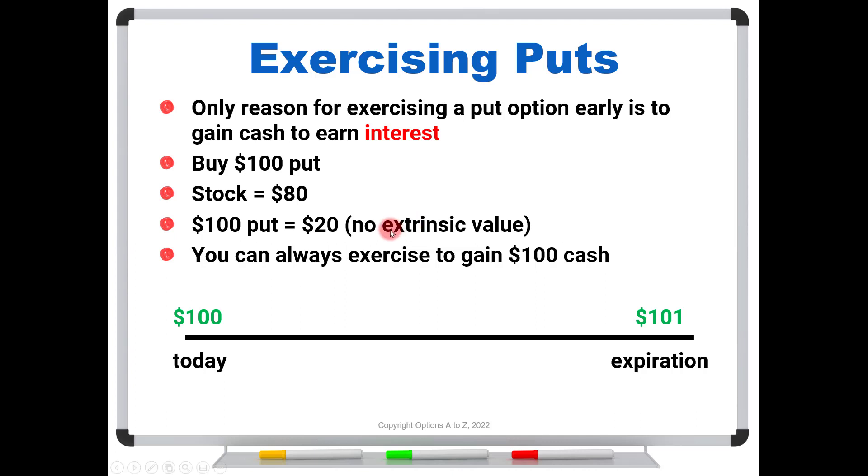Now as one final note, what if you did have extrinsic value? What if this put were trading for $21, and you wanted the cash for some reason, whether it was to earn interest or to put it to use in a different area for another investment? Well, sell the put, let's say for $21, sell the stock for $80. Now you've got $101 today instead of $100. See, that's why it would always make more sense to just sell the stock and the put, because the put always has to be worth at least intrinsic. So those two numbers together always have to add up to $100 once it's in the money. But if it adds up to more than that, you're better off just selling them individually and then investing that cash.